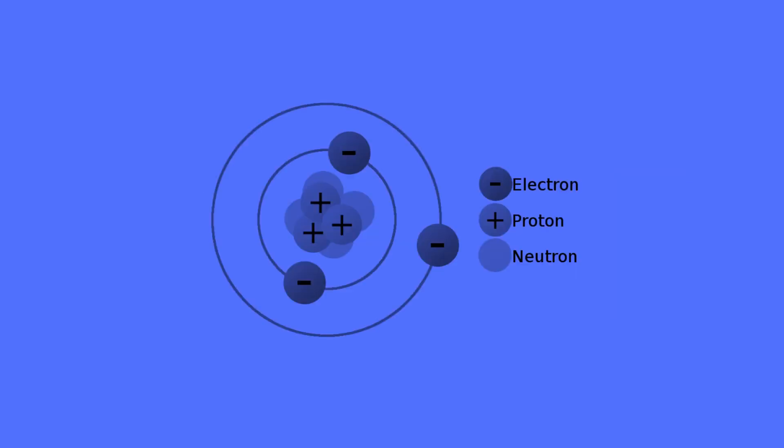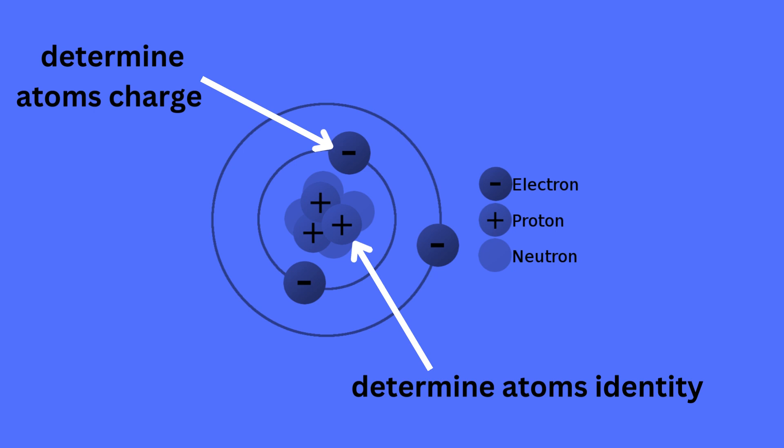Within this atom, there is a certain number of protons which determine the identity of the element. Another part of an atom is its electrons, which revolve around the nucleus of the atom. The amount of electrons determines the charge of the atom, which determines how an atom interacts with other atoms, as they can attract or repel.